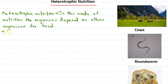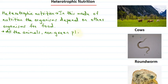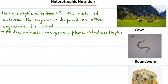In autotrophic nutrition, the organisms never depended on other organisms for food because they synthesize their own food. But here the organisms are dependent on other organisms for food as they do not synthesize or prepare their own food. So all the animals as well as the non-green plants — those which do not perform photosynthesis — they are heterotrophic organisms.